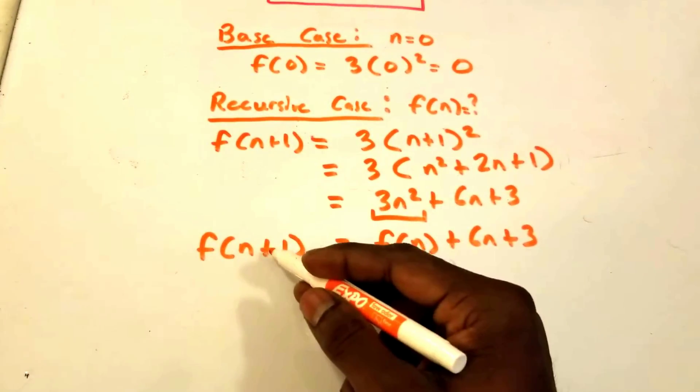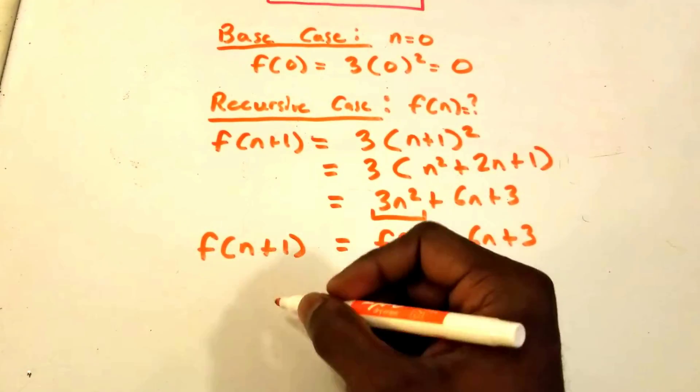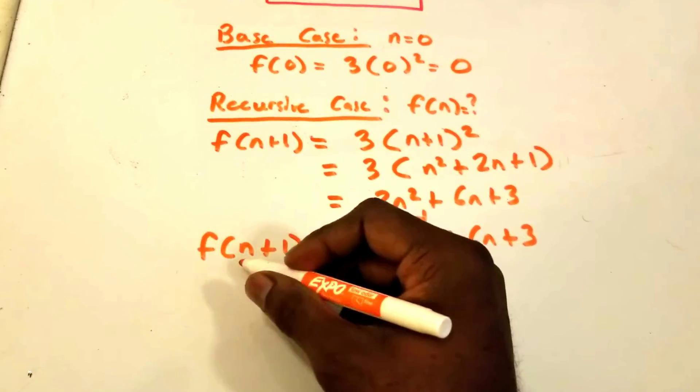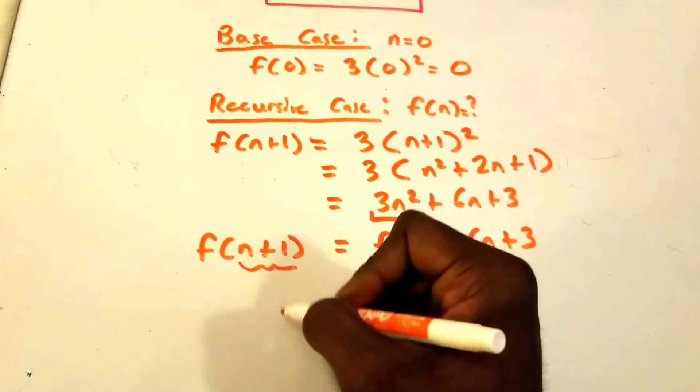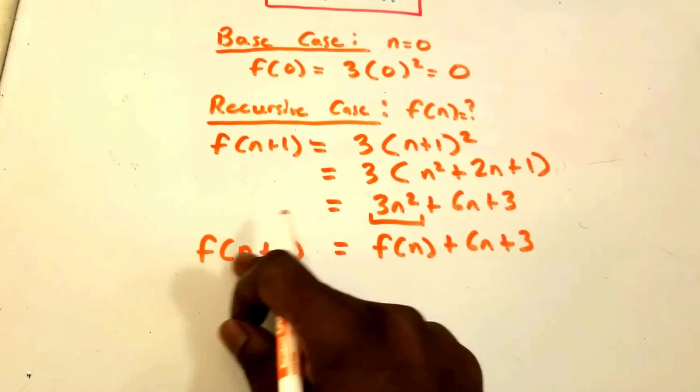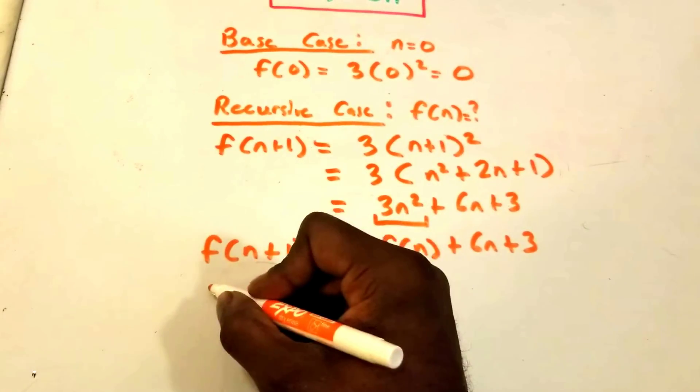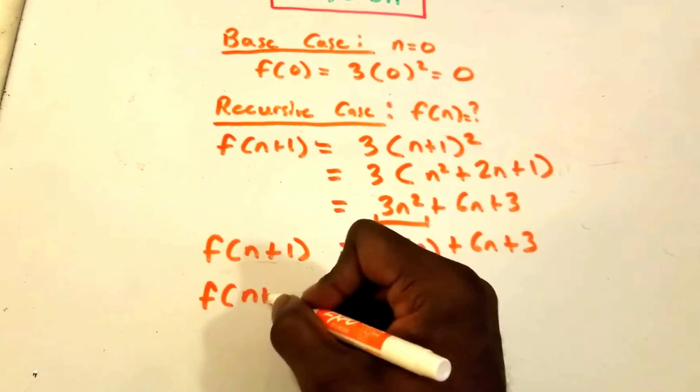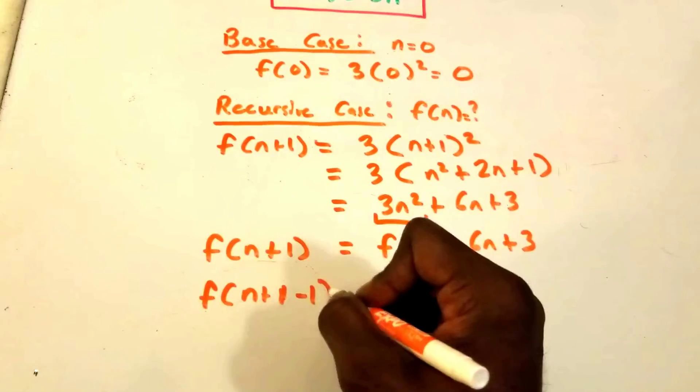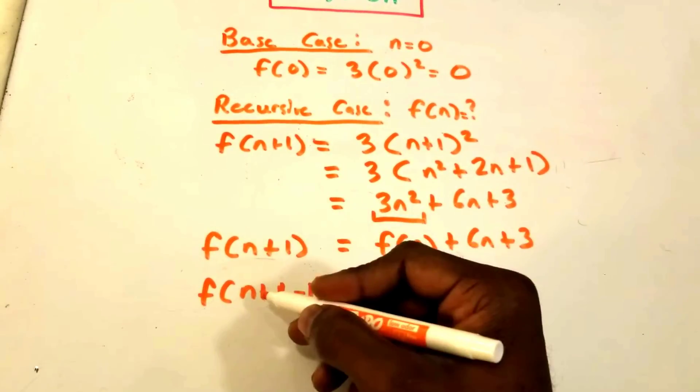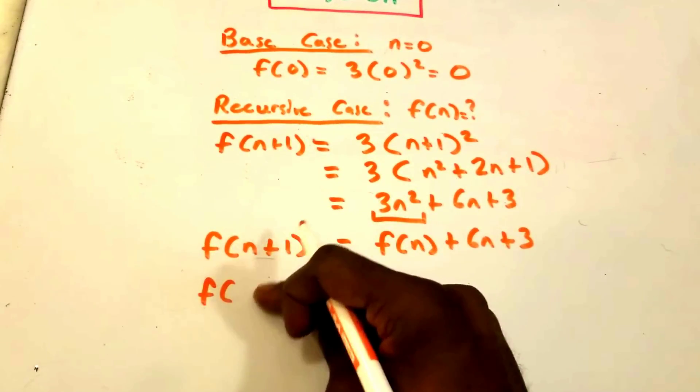But one way that we're going to do this is we're going to subtract 1 from our input parameter here. So I'm going to subtract 1, so now we're going to get f(n+1-1), and then of course that's just f(n), so I'm just going to write f(n) here.